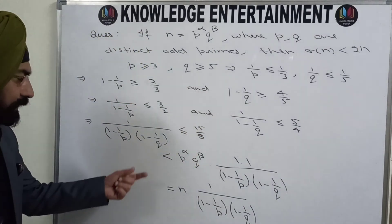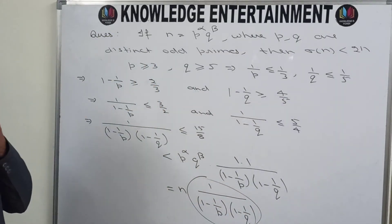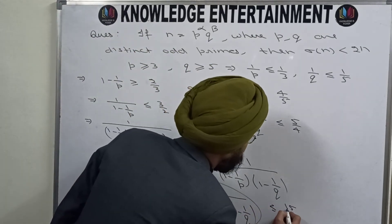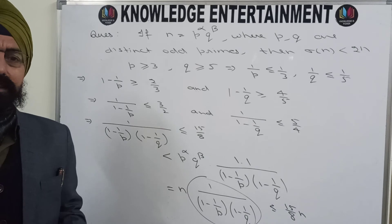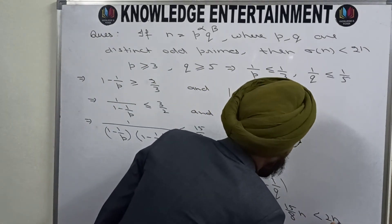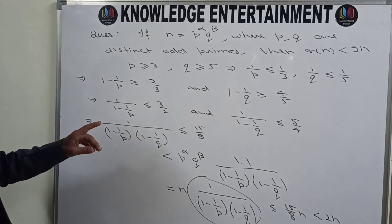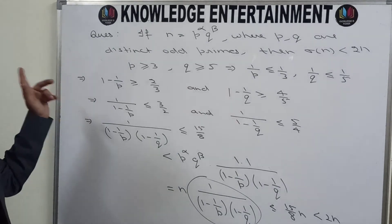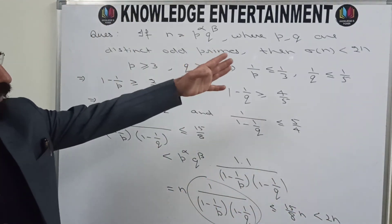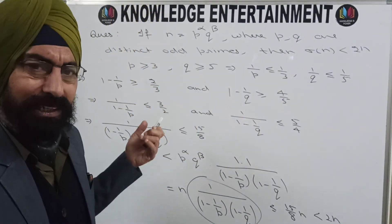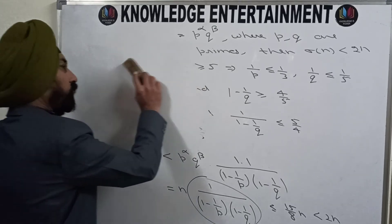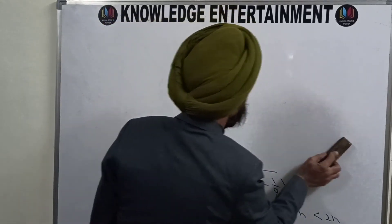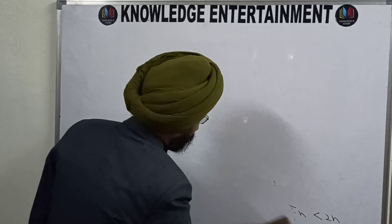Therefore σ(n) < n · 15/8. Since 15/8 < 16/8 = 2, we conclude σ(n) < 2n, which is the required result. This is a very interesting problem using properties of number theory and the definition of σ(n), the arithmetic function for the sum of divisors.